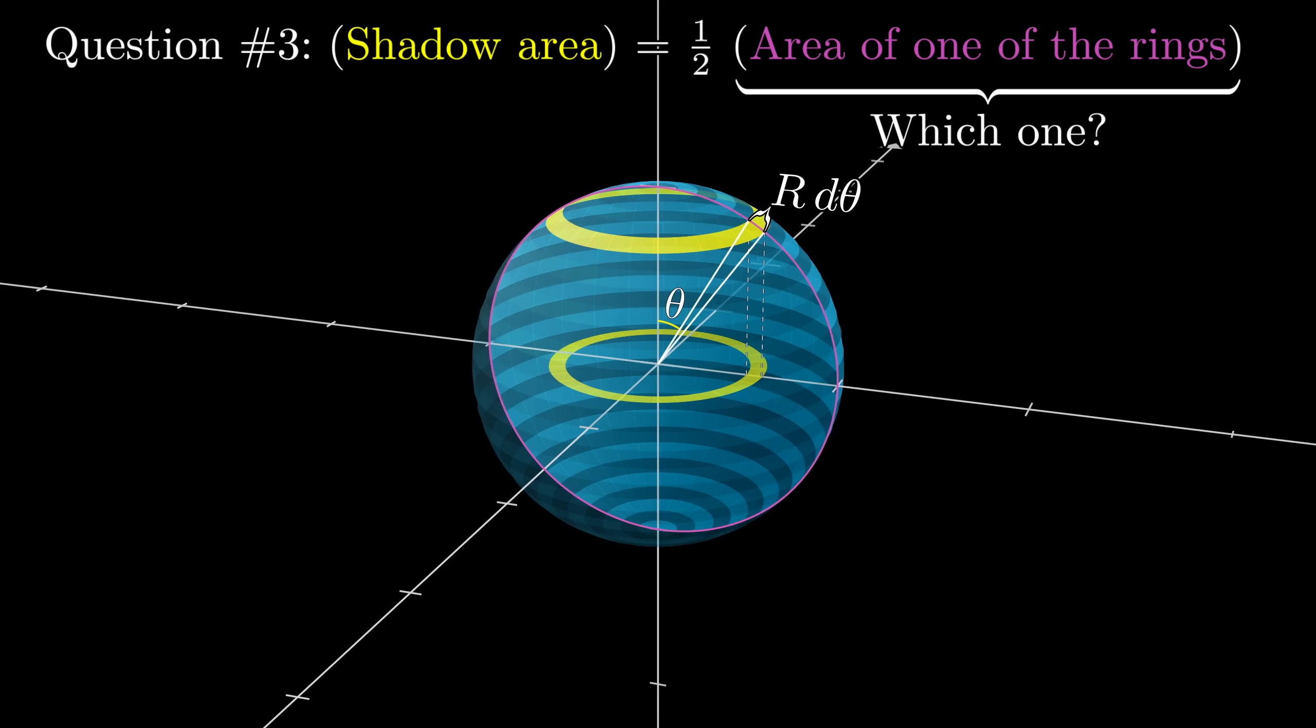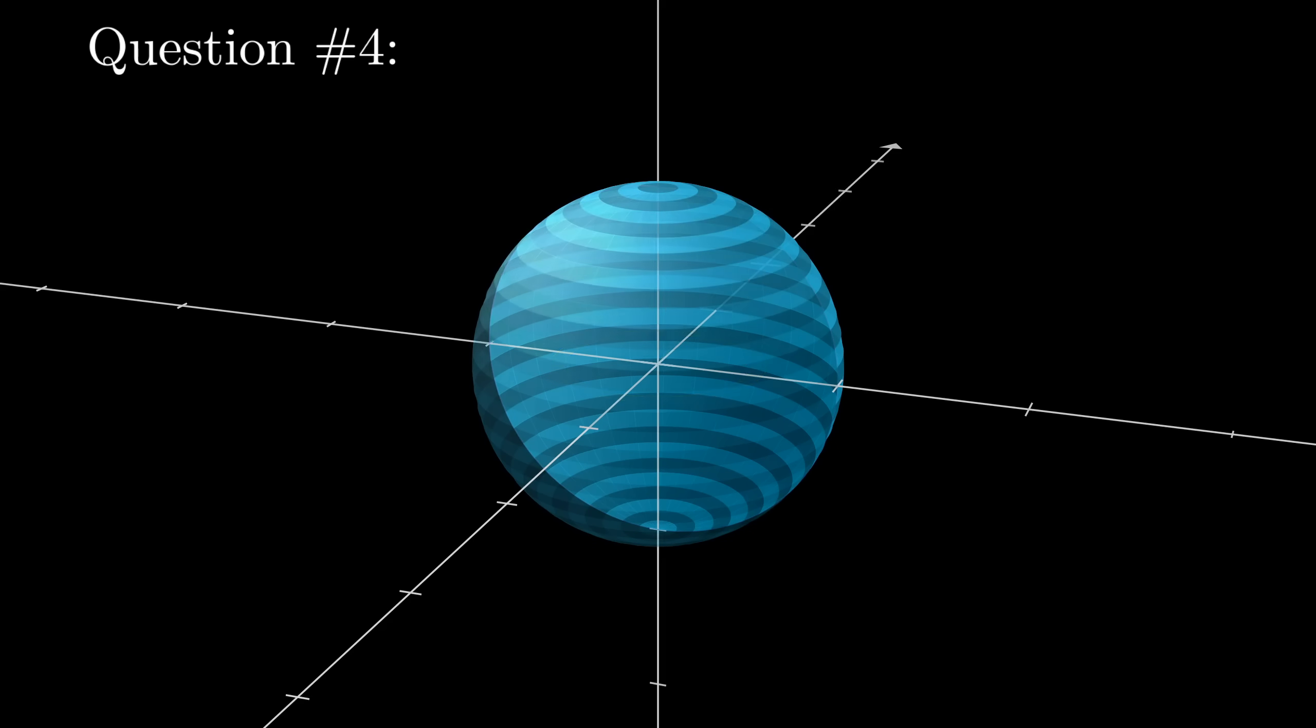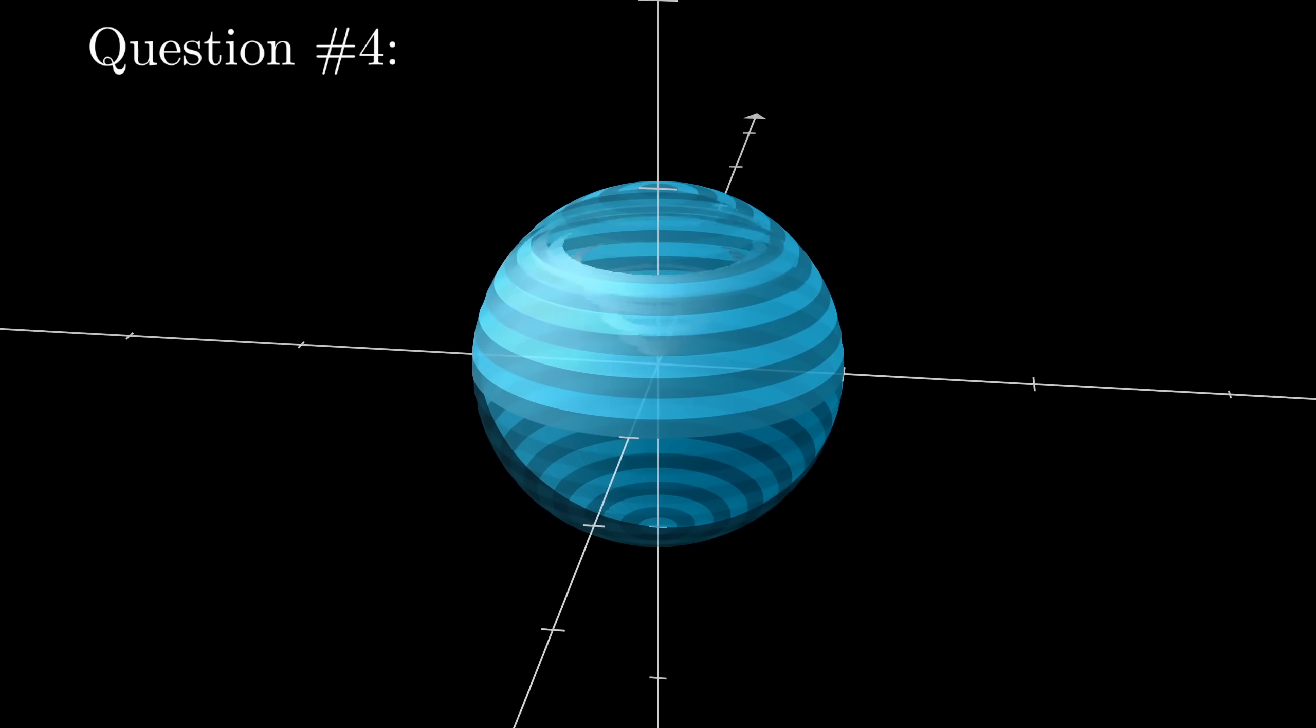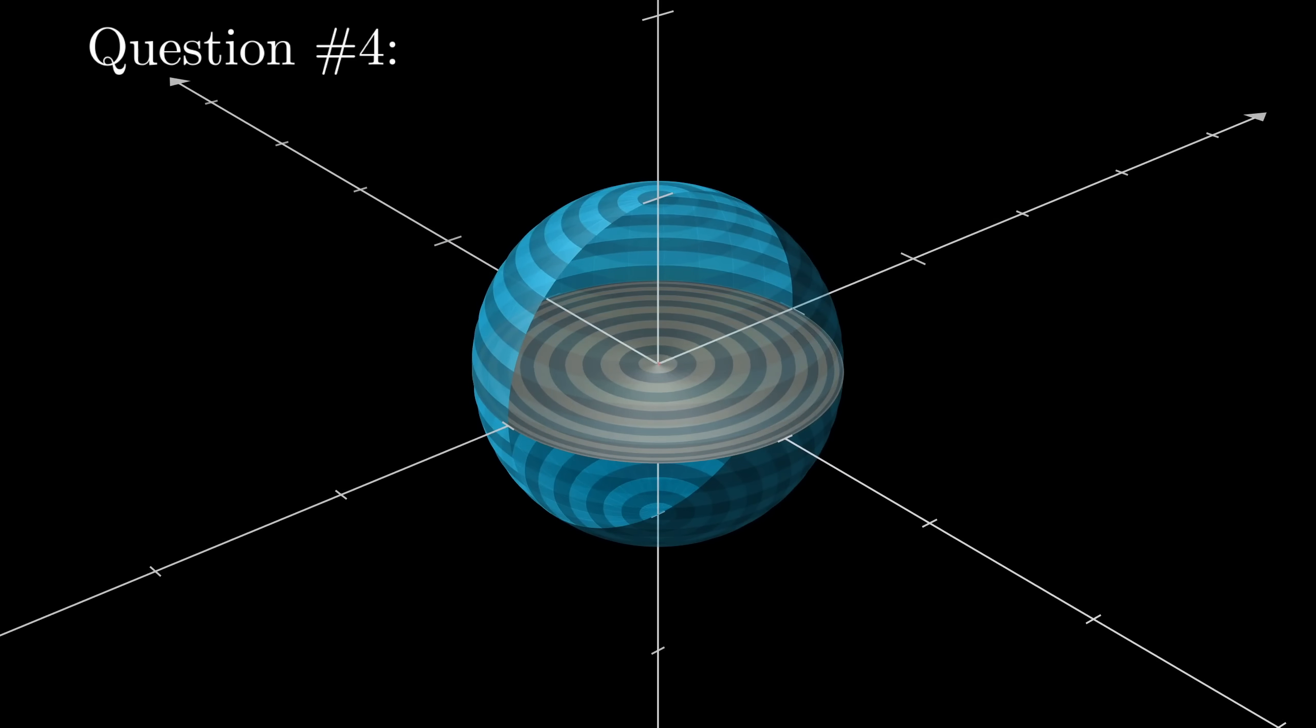As a hint, you might want to reference some trig identities for this one. Question number four, I said at the outset that there's a correspondence between all of the shadows from the northern hemisphere, which make up a circle with radius r, and every second ring on the sphere.